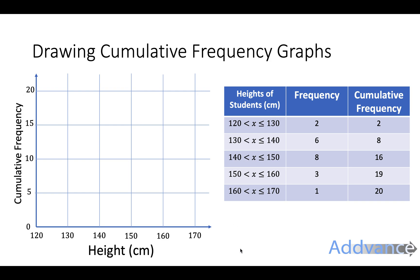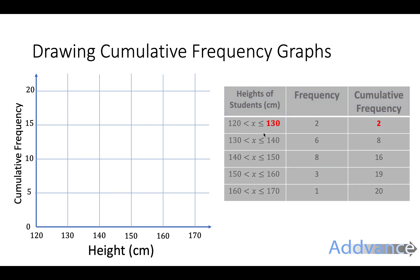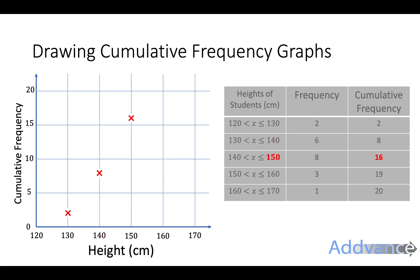To start plotting points, the first point is going to be 130 and 2 — the upper boundary of the group and the cumulative frequency so far. We go across to 130 and up to 2, and we put a point there. Then 140 and 8, then 150 and 16, then 160 and 19, then 170 and 20.